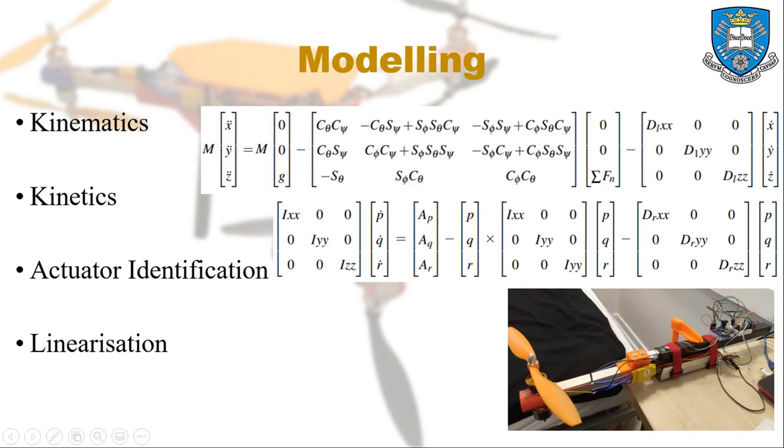Kinematics deals with the UAV geometry and the relativity of motion. By using Euler angle transformations, we are able to define the UAV's velocities and positions in 3D Euclidean space.